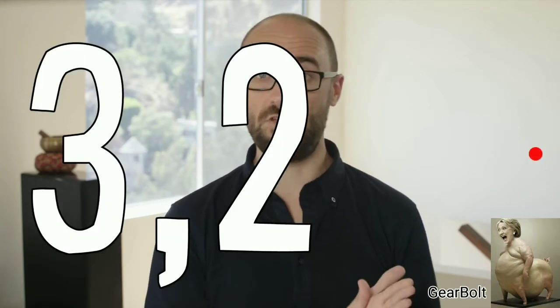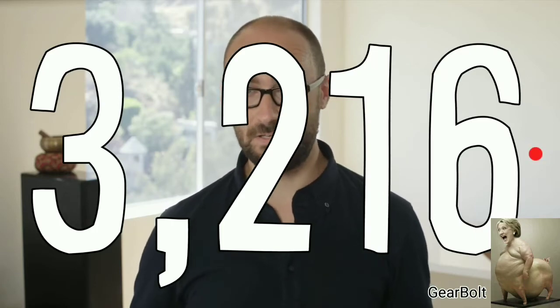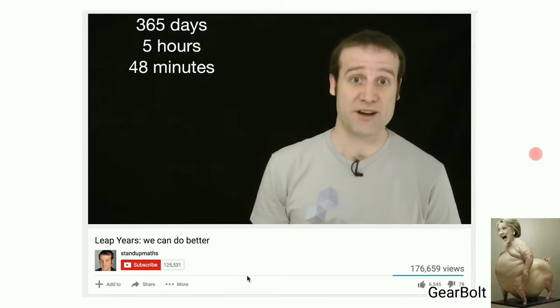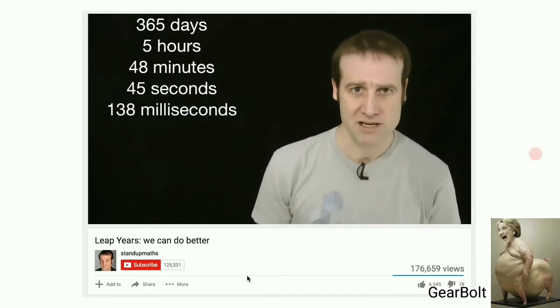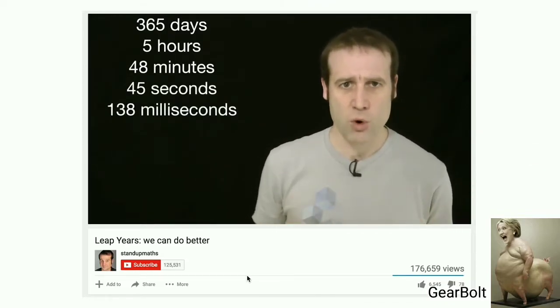Although more closely hitched to the seasons than the Julian, the Gregorian calendar still isn't perfect. Its difference causes dates to become one day off from the seasons every 3,216 years. Other calendars have been proposed like the one stand-up Maths calculated that drifts off even more slowly. His video is a great watch by the way. But enough of all of this.